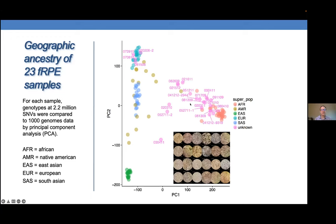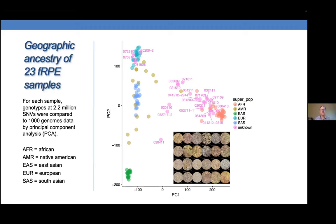Now having genotypes, we needed RNA-seq. Because we were working in cells and not autopsy samples, we decided to take advantage of that, and our interest in RPE metabolism caused us to perturb these cells metabolically. We differentiated them for an extended period of time and then for a brief 24 hours put them in media that differed only in the sugar — either glucose and glutamine, or galactose and glutamine. Galactose is inefficiently metabolized by the glycolytic pathway, forcing cells to metabolize glutamine as an energy source, driving down glycolysis and upregulating oxygen consumption.